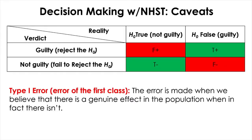Between these two types of error, statistical hypothesis testing research is heavily weighted against the Type 1 error, meaning that researchers are more concerned about saying they found something important or significant when in fact they didn't — they're more concerned about lying about their results or findings or discovery.